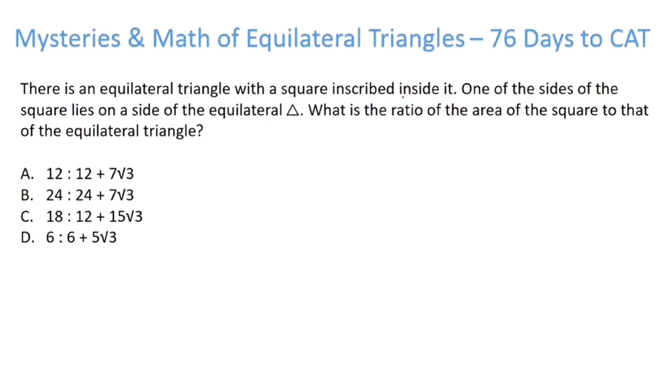There is an equilateral triangle with a square inscribed in it. One of the sides of the square lies on the sides of equilateral triangle. What's the ratio of square to that of equilateral triangle? So let's see.